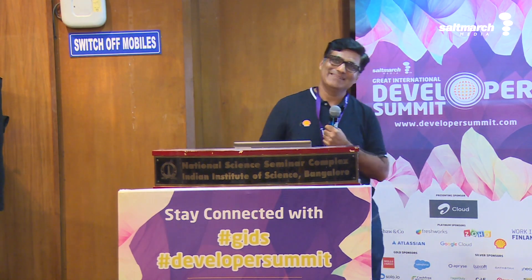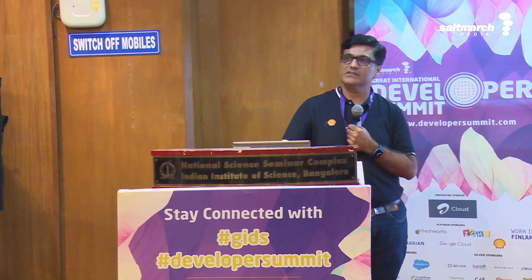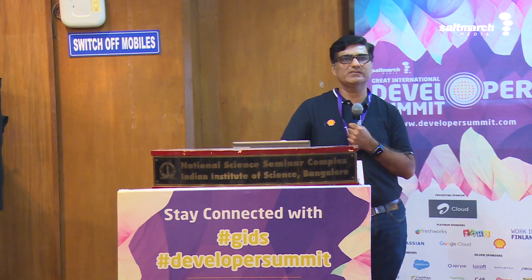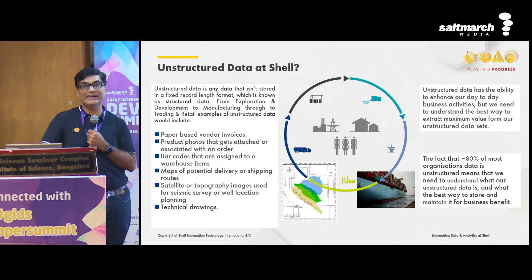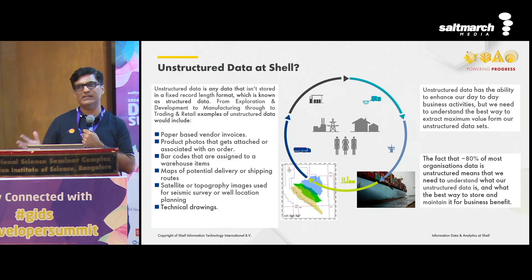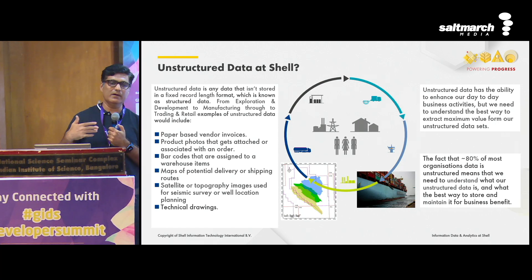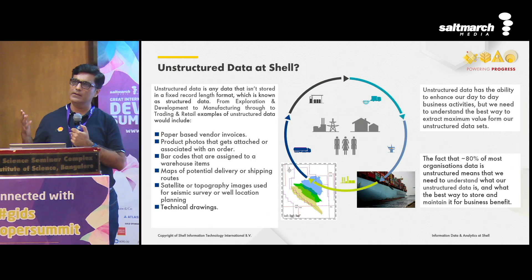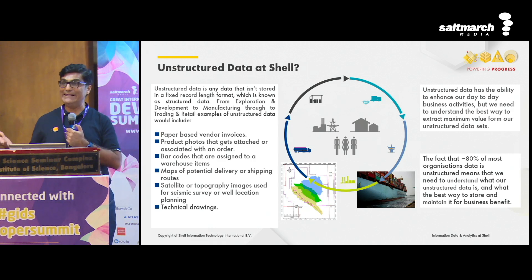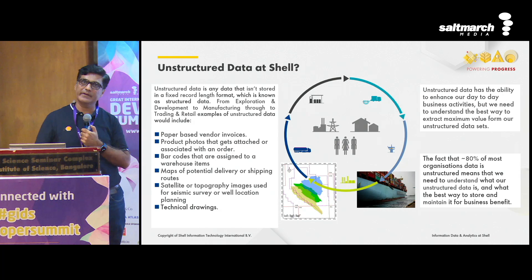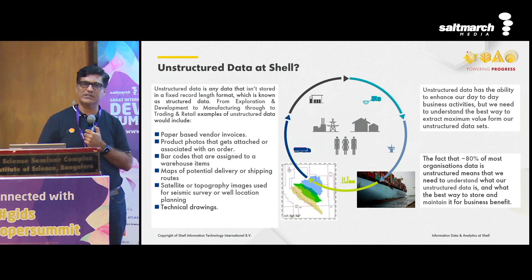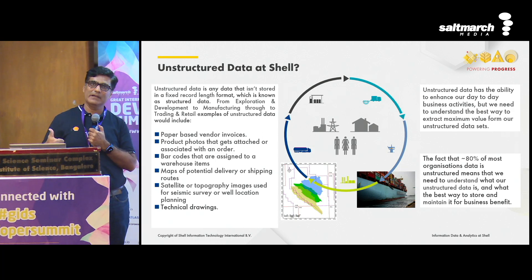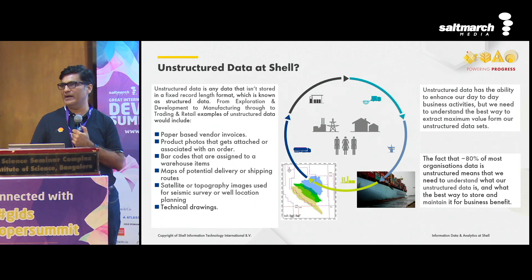Data quality is another challenge in unstructured data. In structured data, you have a lot of algorithms that you can build to assess data quality. But for unstructured data, how do you build data quality dashboards? How do you make sure that data governance covers those data quality aspects? I belong to the information management department in IT, in information data and analytics. Information management is a prerequisite to manage unstructured data and also structured data. We deal with taxonomy — better the taxonomy, better the chances of handling this data.